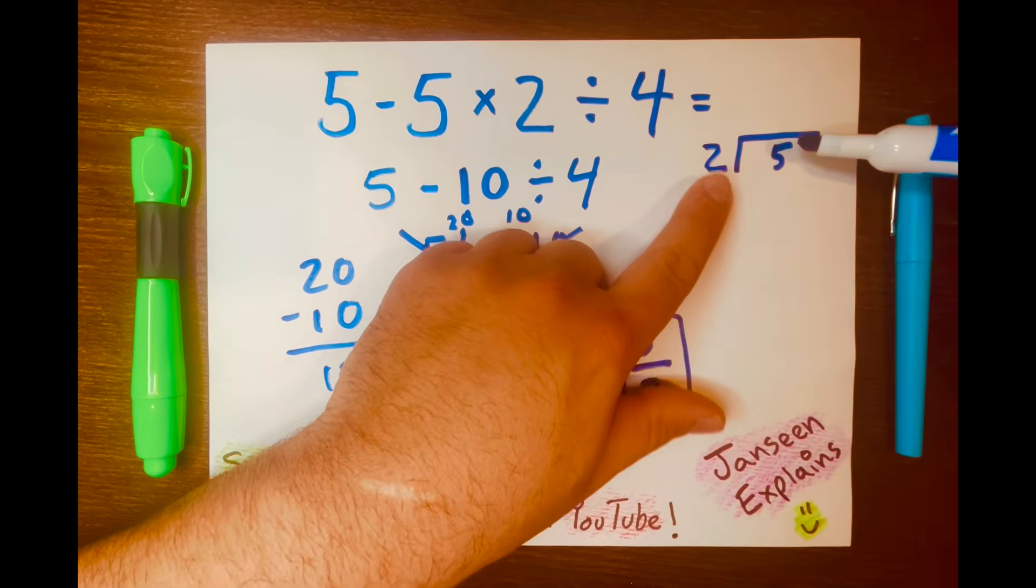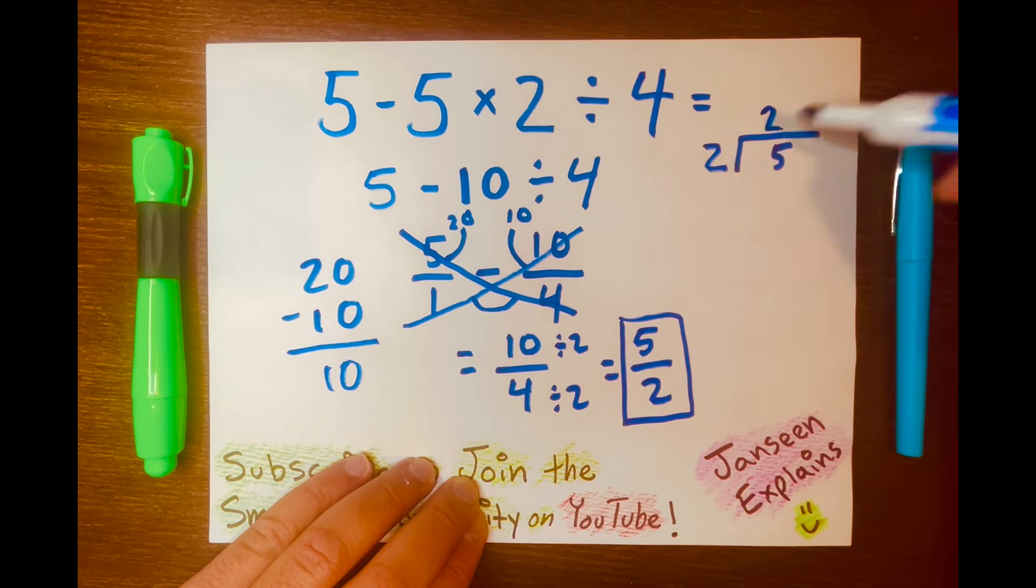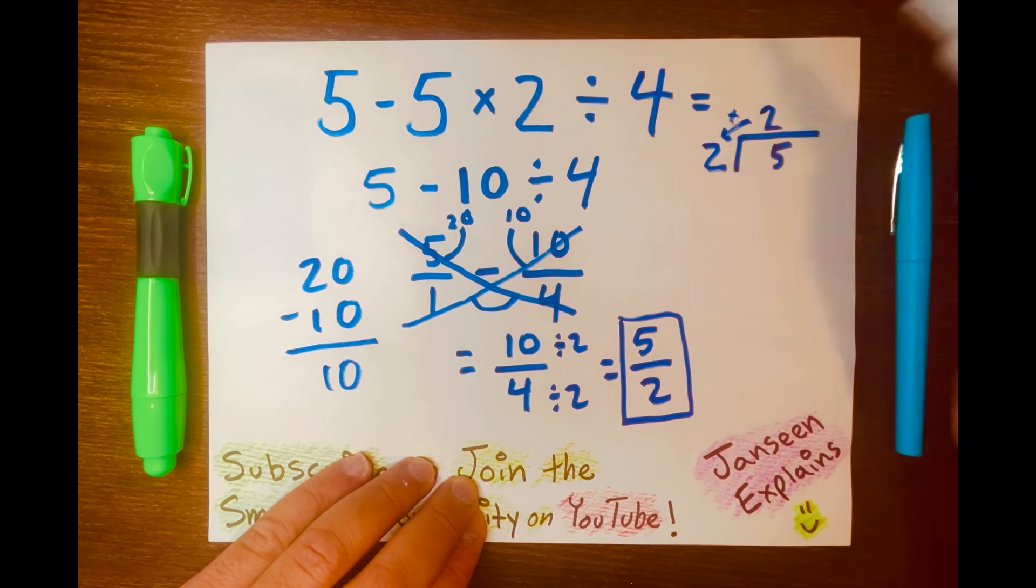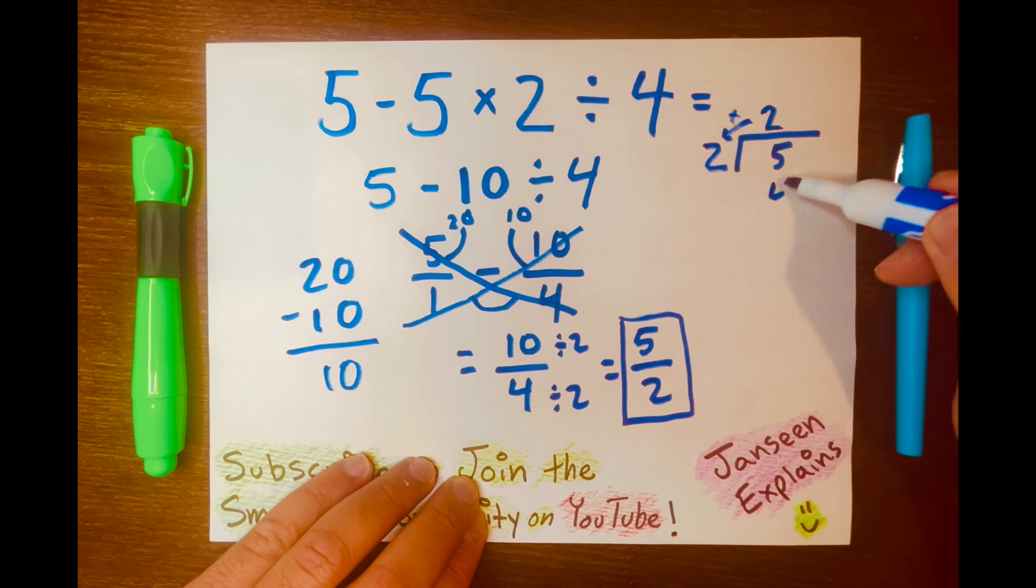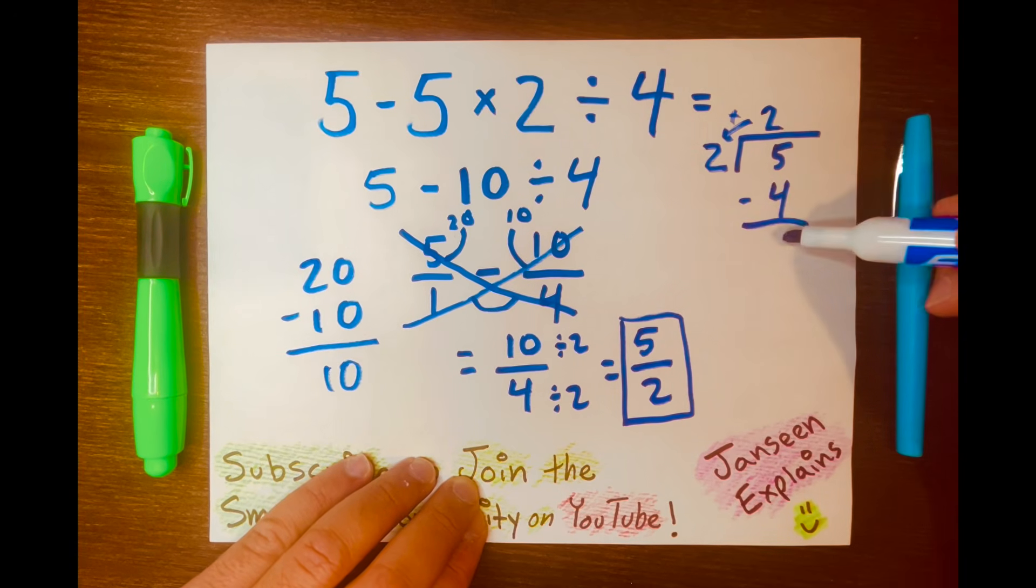So how many times can 2 fit into 5? I'll write 2. And then we multiply 2 times 2 equals 4. And we subtract 5 minus 4 equals 1.